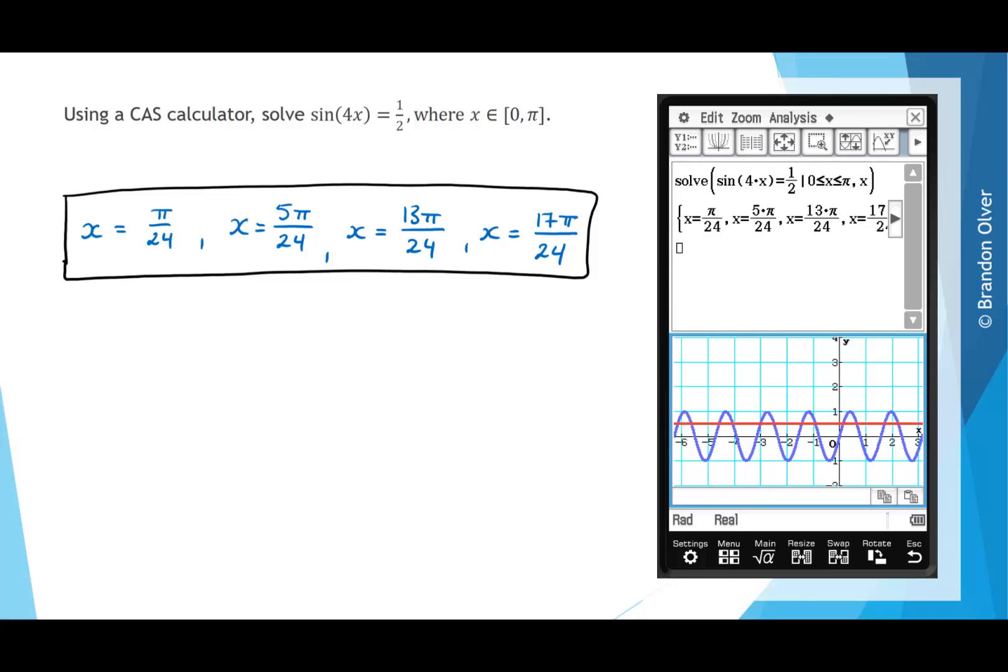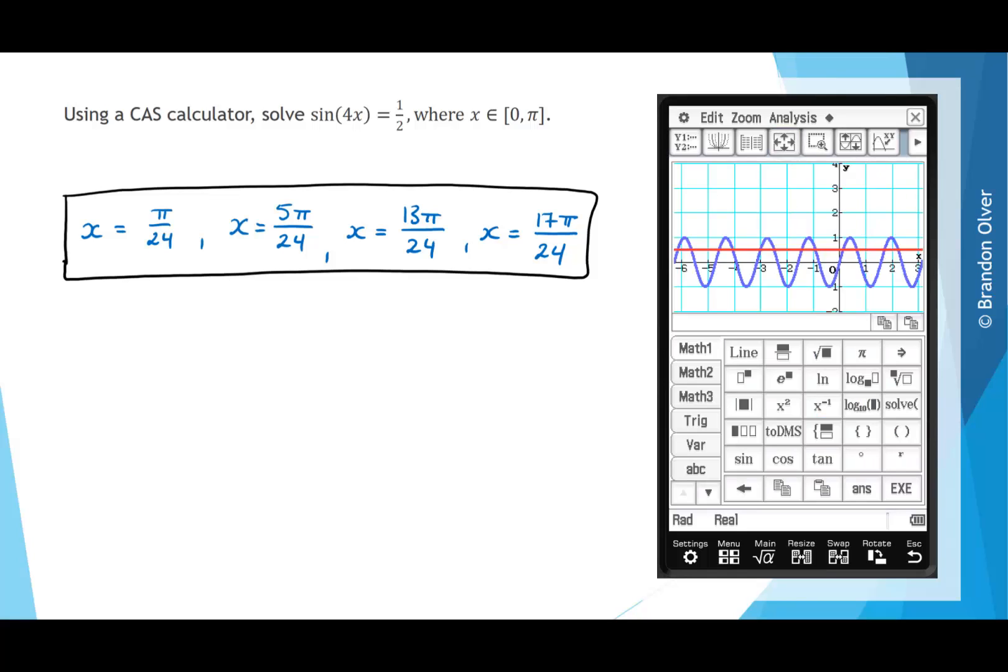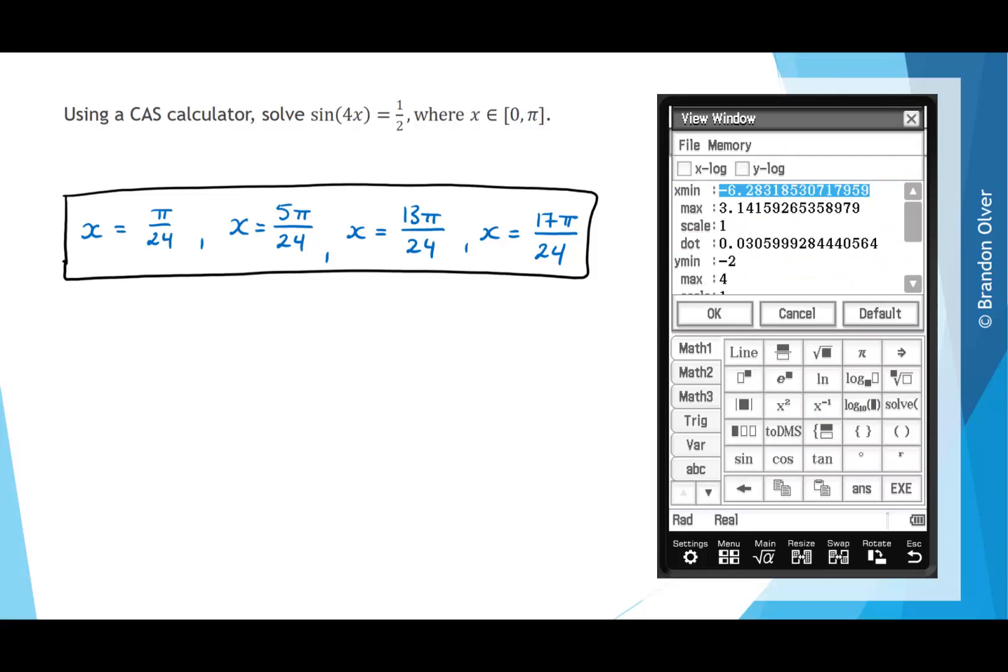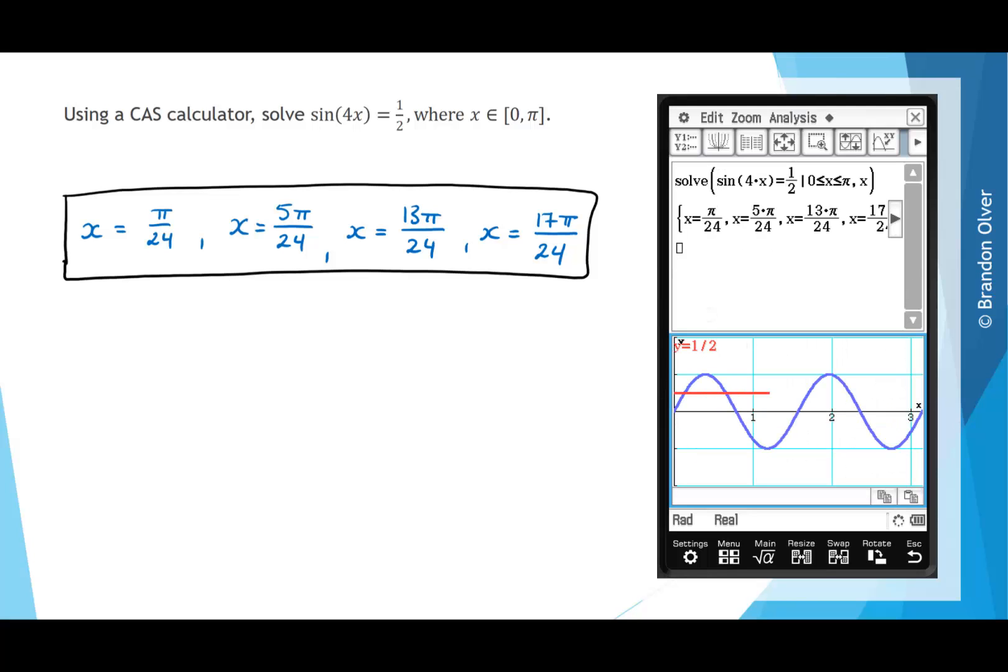Once again, we had a restricted domain, so if we click on the four arrows, that allows us to change the view screen, and we want to go between x = 0 and π, and then we want to go perhaps from -2 to +2. And if we hit OK, that will show us the 4 solutions as 4 points of intersection between sin(4x) and y = 1/2.